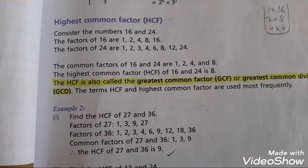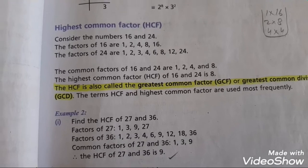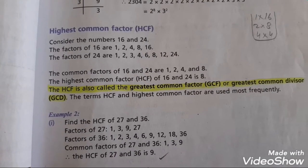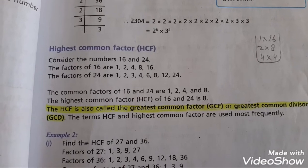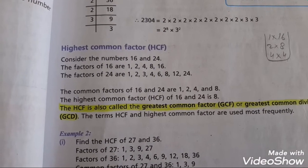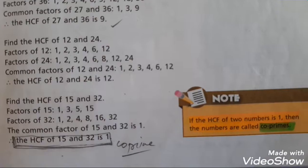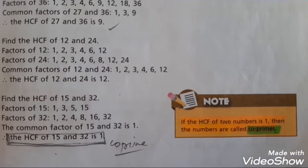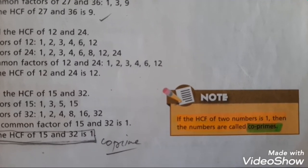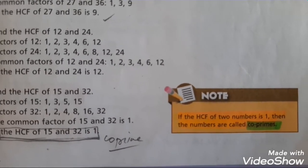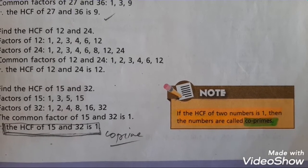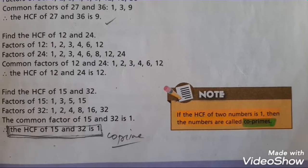On page number 47, the HCF is also called the greatest common factor. HCF को हम लोग greatest common factor GCF भी बोलते हैं, और greatest common divisor GCD भी बोलते हैं। If the HCF of two numbers is 1, then the numbers are called co-prime numbers.